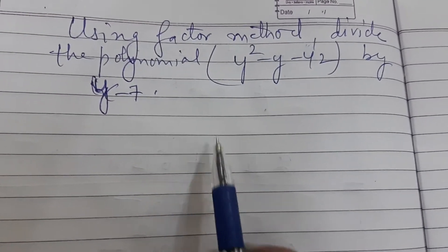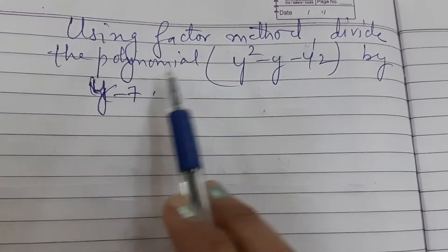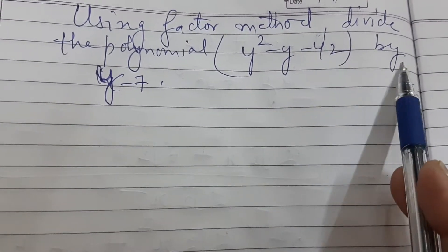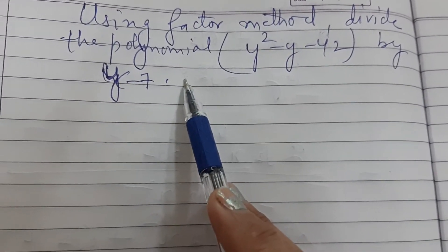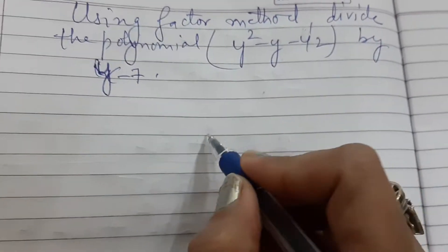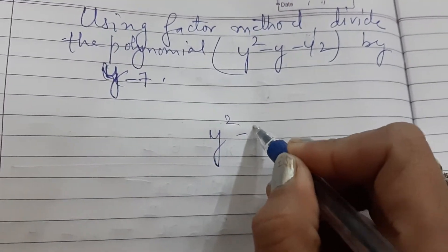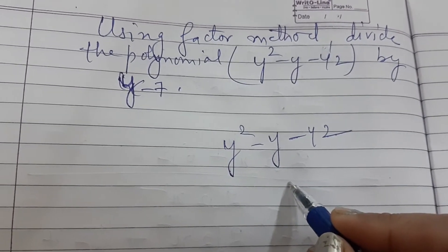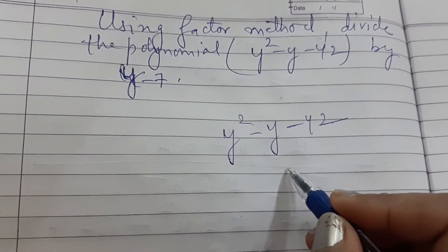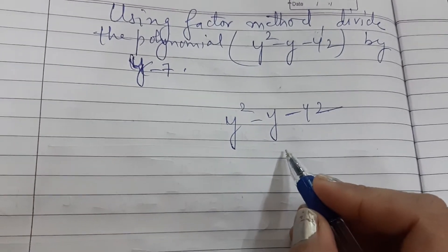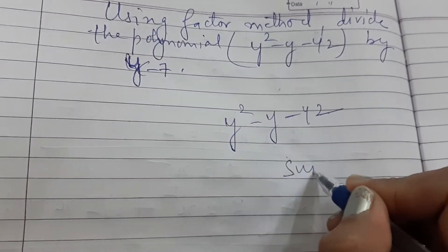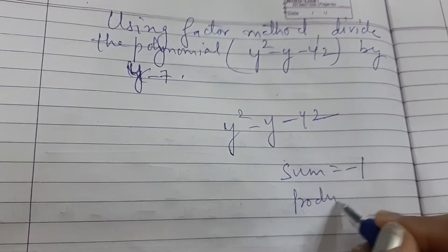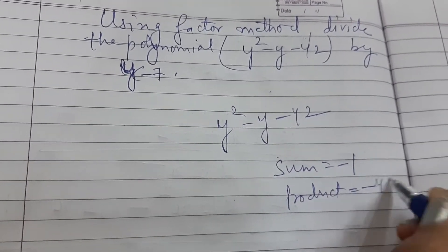This question is very interesting. Using the factor method, divide the polynomial y squared minus y minus 42 by y minus 7. For factorizing y squared minus y minus 42, we will be using the splitting the middle term method. Think of two numbers whose sum is minus 1 and product is minus 42.